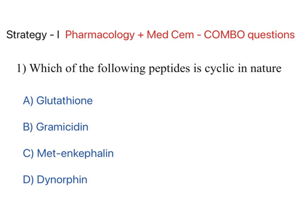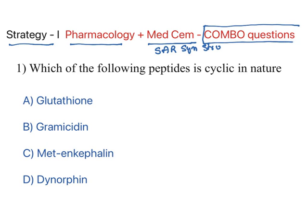First strategy: pharmacology and medicinal chemistry are conceptually very similar. The difference is that in medicinal chemistry you read SAR, synthesis, and structures in detail, but the mechanism of action and related concepts are very similar. Whenever you read pharmacology, include medicinal chemistry as well, because certain questions are combo questions covering both subjects. Read them together.